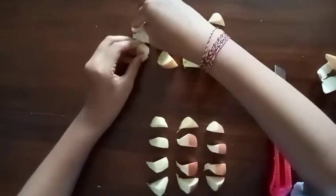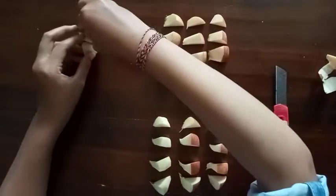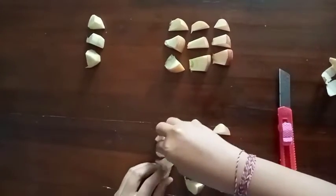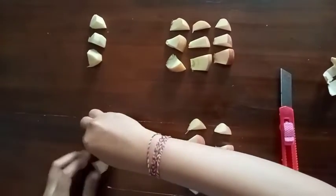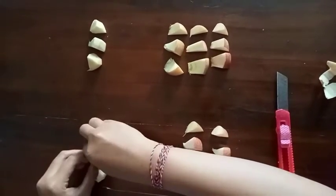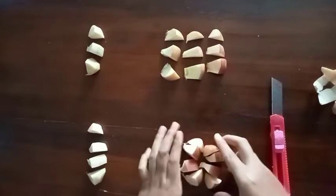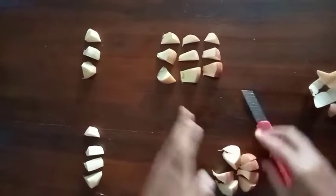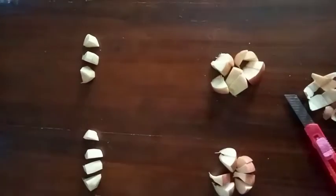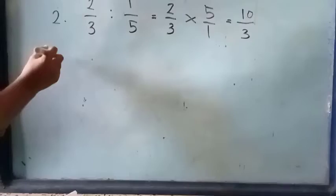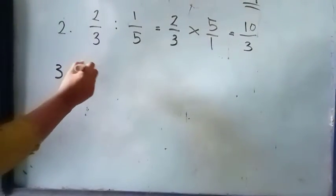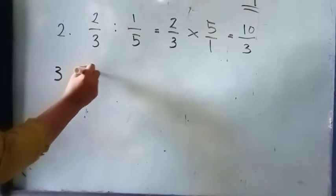Untuk mengetahui hasilnya, misalkan bagian apel yang sudah dikupas dengan yang tidak, hitunglah yang sudah dikupas. Bagian atas memiliki 3 bagian apel dan bagian bawah memiliki 4 bagian apel. Hasilnya 3/4 bagian.